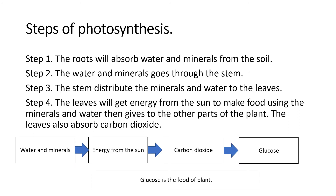Steps of photosynthesis. Step 1: the roots will absorb water and minerals from the soil. Step 2: the water and minerals goes through the stem. Step 3: the stem distributes the minerals and water to the leaves. Step 4: the leaves will get energy from the sun to make food using the minerals and water, then gives to the other parts of the plants. The leaves also absorb carbon dioxide.